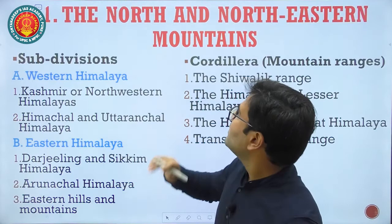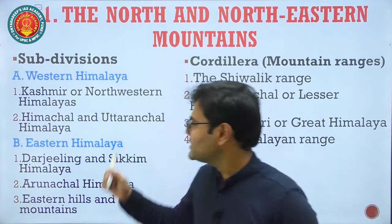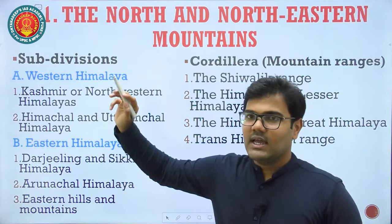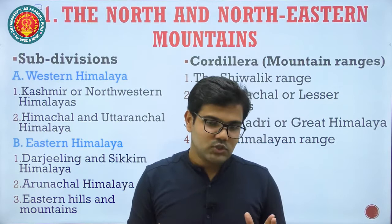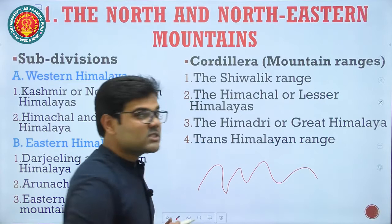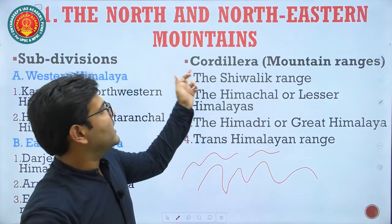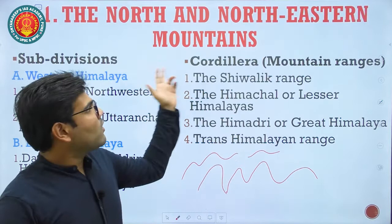Today we will have a brief introduction to the northern and northeastern mountains and study their subdivisions in detail in the next lecture. When I say northern and northeastern mountains, I mean the Himalayan mountain system. Himalaya is not a single mountain but a mountain range. When there are many mountains it becomes a mountain range; when there are many mountain ranges it becomes a cordillera — so the Himalaya is a cordillera system.